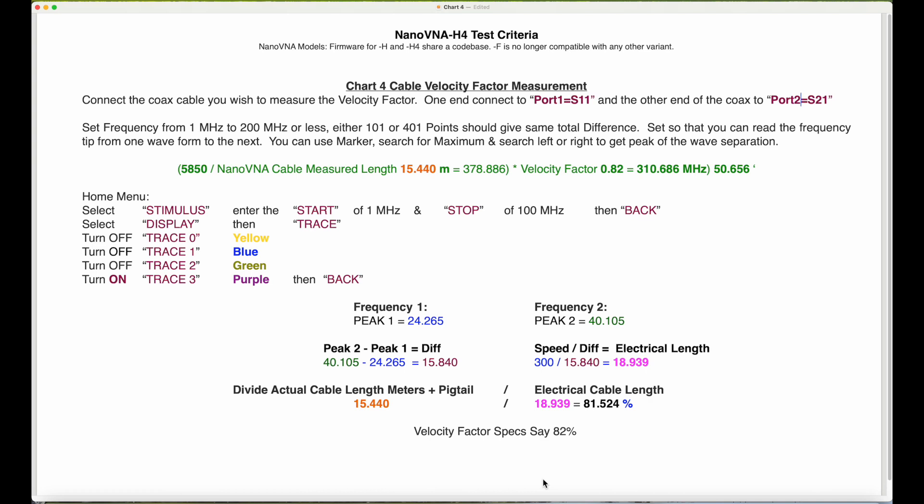It's not critical whether you're subtracting from peak one to peak two, or peak two to peak one. Just ignore the negative figure. So you would subtract 40 minus 24, you should get a figure of 15.840.